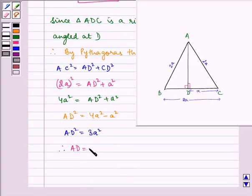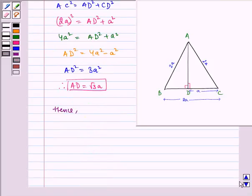AD is equal to √3A. Hence, each altitude is equal to A√3. Therefore, the required answer is A√3.